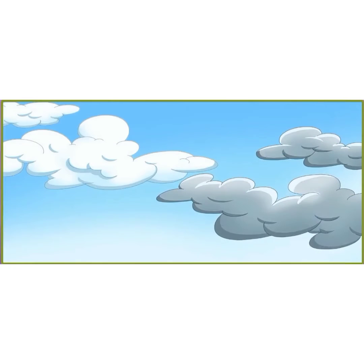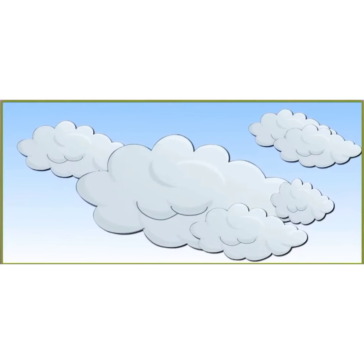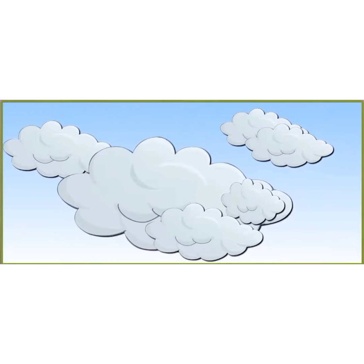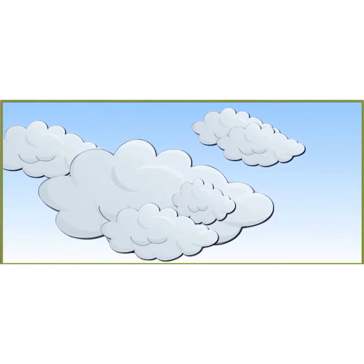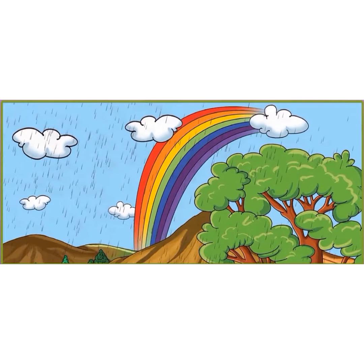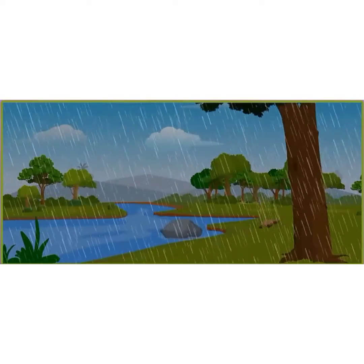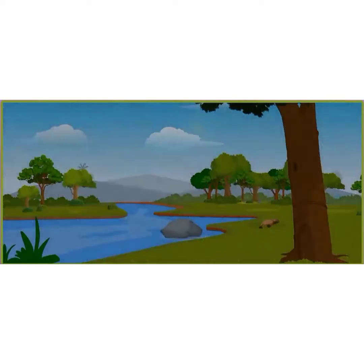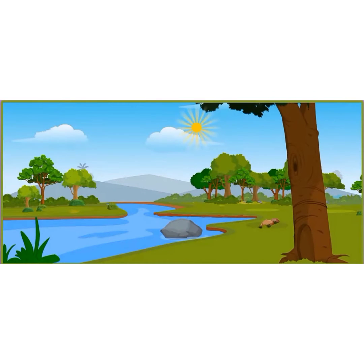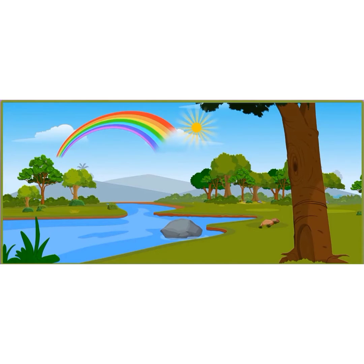Clouds can be of two colors — some are white and some are gray, which have water in them. Clouds carry water vapor. Next is the rainbow. Whenever it rains, and after the rain when the sun comes out, we can see a beautiful rainbow in the sky.